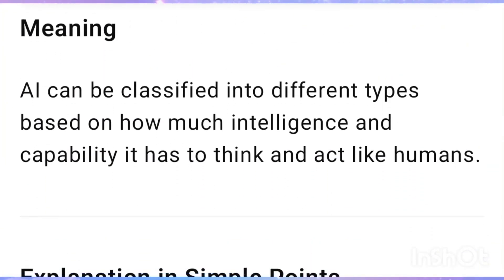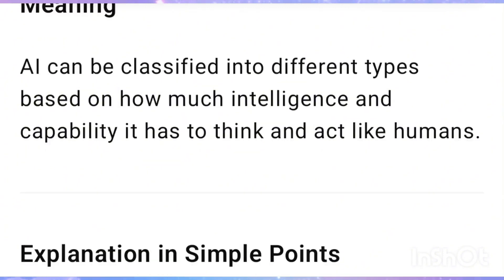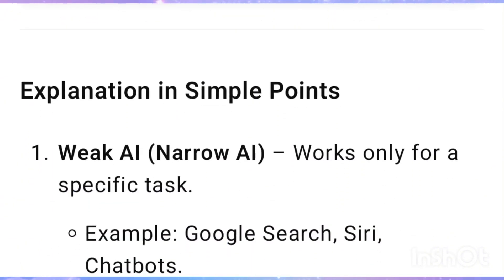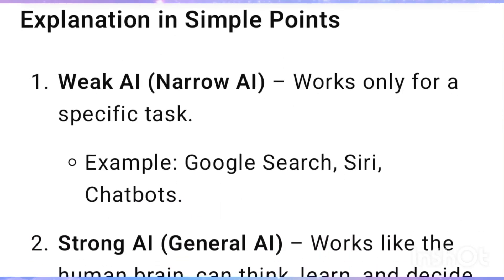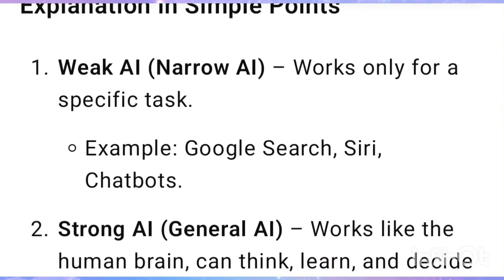Types of Artificial Intelligence: AI can be classified into different types based on how much intelligence and capability it has to think and act like humans. Weak AI, also called Narrow AI, works only for a specific task. Examples include Google Search, Siri, and chatbots.